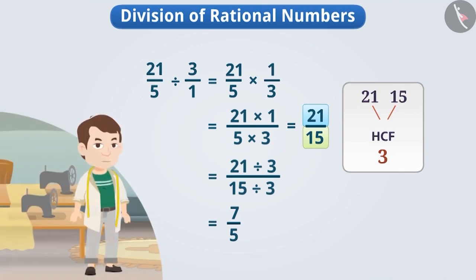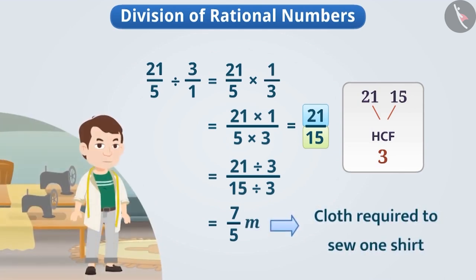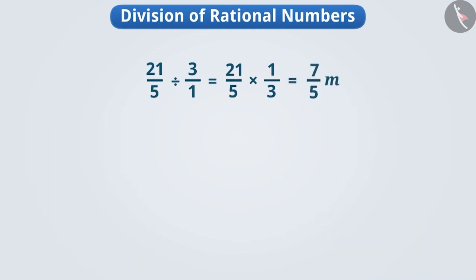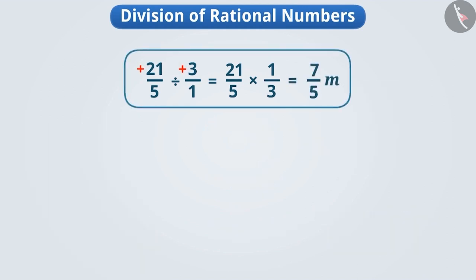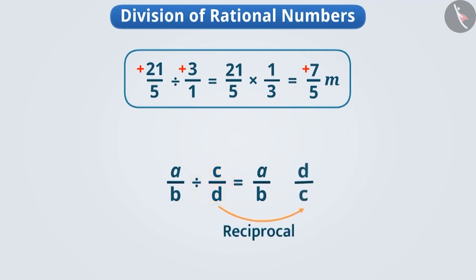That is, the tailor took seven-fifths of a metre of cloth to sew one shirt. We also find that the division of two positive rational numbers results in a positive number. When dividing a rational number by another rational number, we keep the rational number being divided as it is and multiply it by the inverse of the dividing number. So, a by b divided by c by d is equal to a by b into d by c.